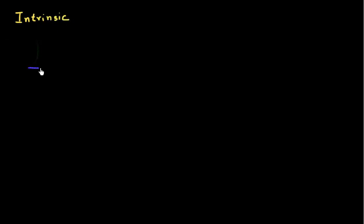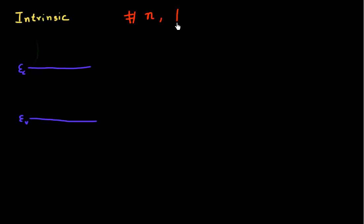Let's say I have an intrinsic semiconductor. What that means is that I have this semiconductor with a conduction band and a valence band, and I've added no dopants to it—I have not added any donors or acceptor atoms. I want to find out how many electrons there are in this intrinsic semiconductor, and how many holes there are. I can give both of them a subscript i, indicating that these are for the case when the semiconductor is intrinsic.